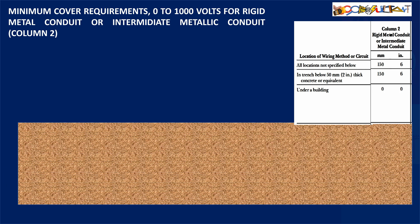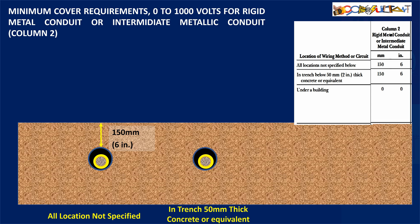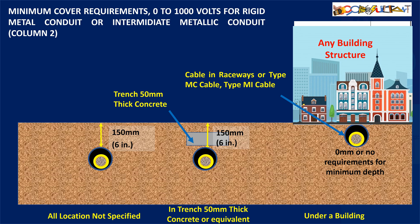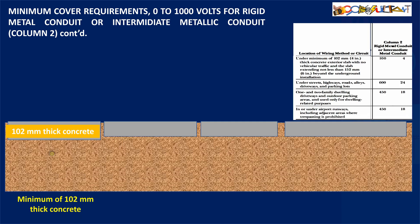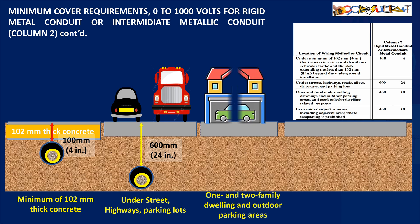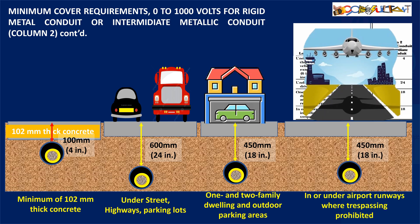For Column 2 (cables in rigid metallic conduit or intermediate metal conduit): in unspecified locations, the minimum cover depth is 150 mm (6 inches). This depth also applies if there is a trench cover of at least 50 mm (2 inches), or if installed under a building where there are no minimum cover depth requirements. In areas with concrete at least 102 mm (4 inches) thick and no vehicular traffic, the cover depth is 100 mm (4 inches). For installations under streets, highways, roads, alleys, driveways, or parking lots, the required cover depth is 600 mm (24 inches). For driveways and outdoor parking areas of one and two family dwellings, the cover depth is 450 mm (18 inches), the same as for airport runways.